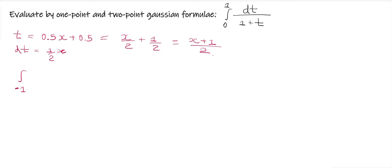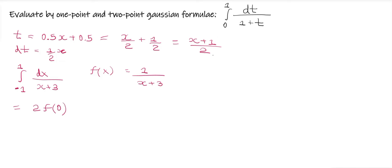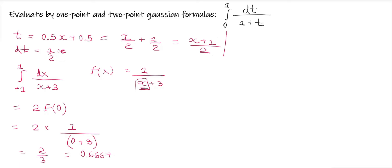After performing all these steps, once we have our limits from minus one to one, we can use the one-point Gaussian quadrature formula: integration from minus one to one f(x) dx equals two into f of zero. Here our f(x) is one upon x plus three. Placing zero in place of x gives two into one upon zero plus three, so the answer is two by three, which is 0.666667.